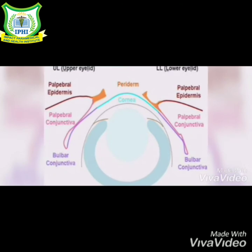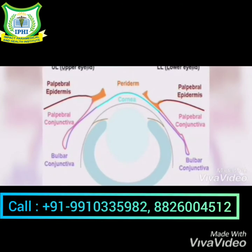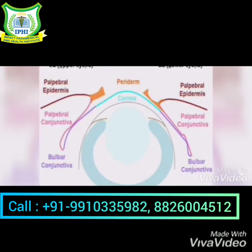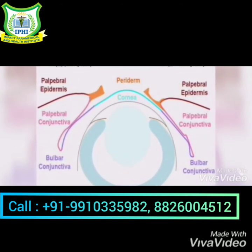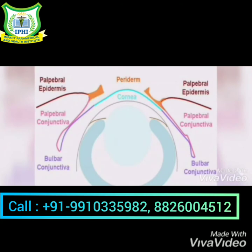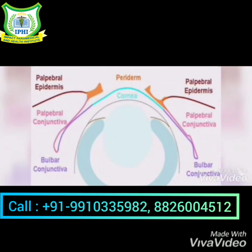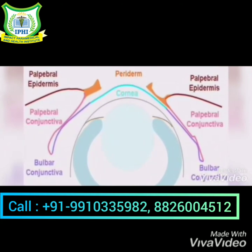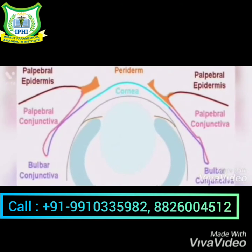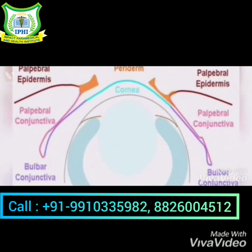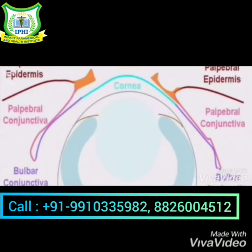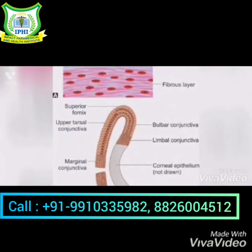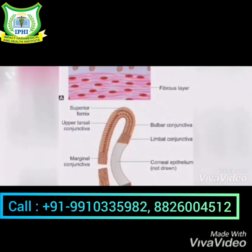The bulbar conjunctiva is thin, transparent, and lies loose over the underlying structures, and thus can be moved easily. It is separated from the anterior sclera by episcleral tissue and Tenon's capsule. The fornical conjunctiva lies at the junction between the palpebral conjunctiva and bulbar conjunctiva; each eye has two fornices — the superior and inferior fornices.